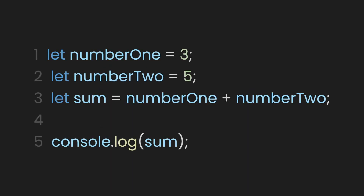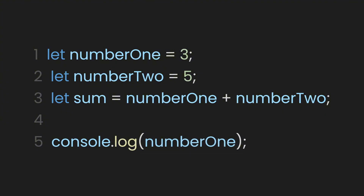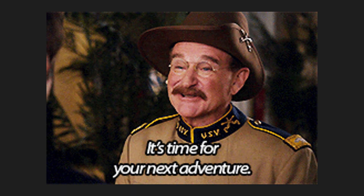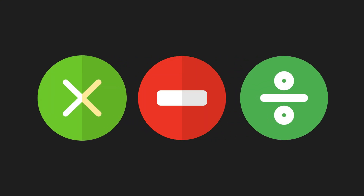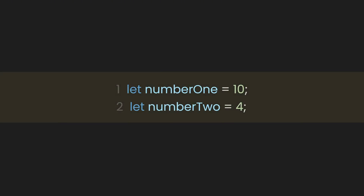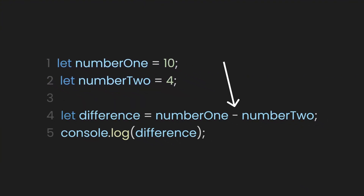Of course, you can log any value. For example, let's log the variable `number1` — you'll see its value in the console. Now that we know how addition works, let's also explore subtraction and other basic operators. The logic stays the same — we just change the operator depending on what we want to do. Here we have two numbers, and to subtract one from another, we use the minus sign. This means we're taking number two away from number one — for example, 10 minus 4 equals 6.